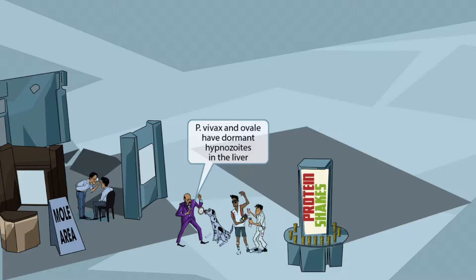This vivax and ovale man has brought his Dalmatian dog, which has a big spot shaped like a liver — this represents the liver. The man in purple to the left is trying to hypnotize the dog, and it looks like it worked. 'Hypnotized' sounds like 'hypnozoites.' Hypnozoites are the dormant form of Plasmodium species which hide out in the liver. The hypnotized liver-spotted dog represents dormant hypnozoites in the liver, as the dog's mind is dormant while under the influence of the hypnotist.